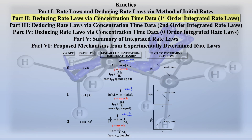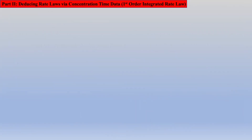Welcome to part two of kinetics review. This review material will focus on deducing first order rate law given concentration time data. It is worth mentioning that the student should have first viewed part one to better comprehend this and subsequent sections. In this introductory video for first order kinetics, we'll examine reactions with only one reactant. Otherwise, pseudo order techniques need to be introduced, and they will not be discussed here.